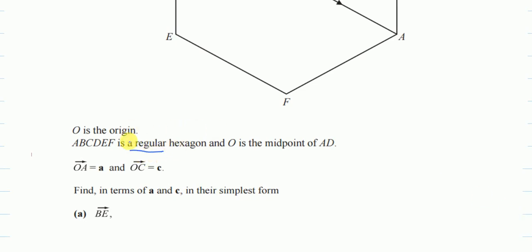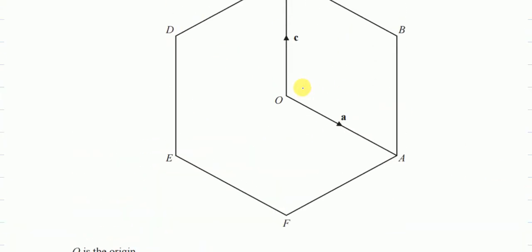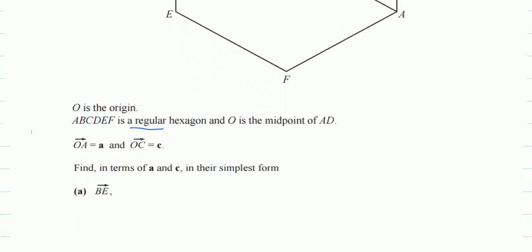This was important for them to write because it means, if it is regular, so this length is equals to this length, and this also equals to this length. This is equal this, this, it is equals to this, and it is equals to this. So all of them are c, this is a, this is a, and this is a. So that's why they wrote regular, it means all of the lines are equal.